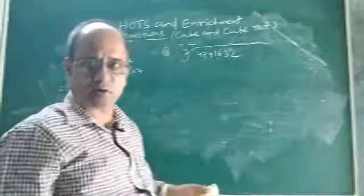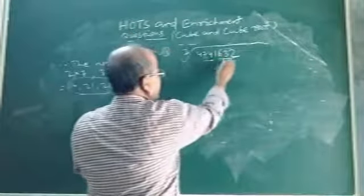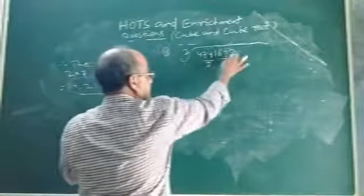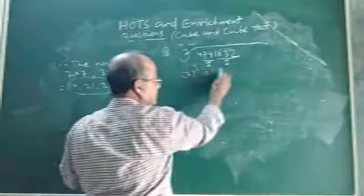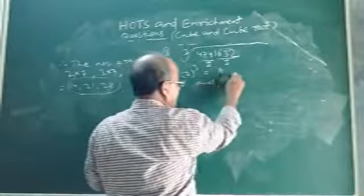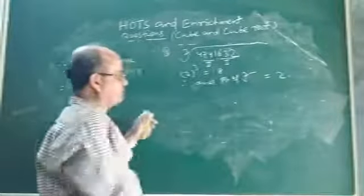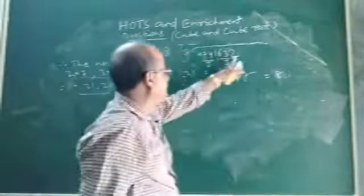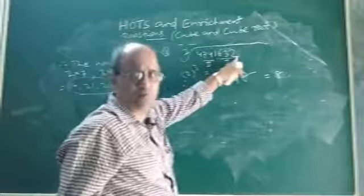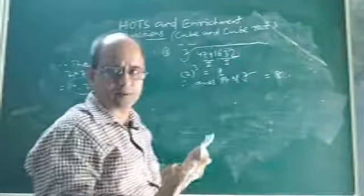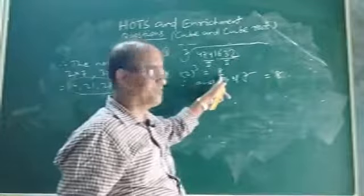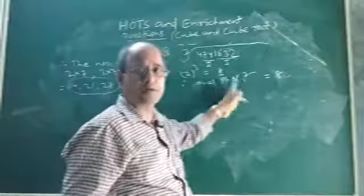For the number 4,741,632: group 1 is 632, group 2 is 741, and group 3 is 4. Now, for the ones digit of the cube root — take the cube of 2, it will be 8. So the ones digit of the cube root will be 8, because 2³ = 8. This 2 is the ones digit from the first group.